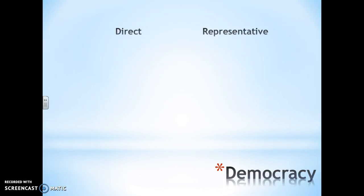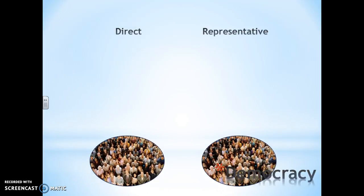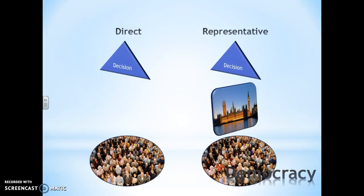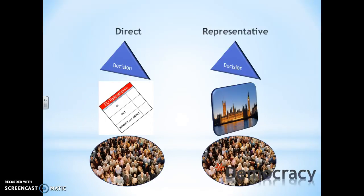So democracy — we know that there are two different types: representative and direct. Now both of those recognise the primacy, or rather the sovereignty, of the people. This is where all political authority comes from. We have the people and we have a decision. In the representative system there is an intermediary — the government, Parliament at Westminster in particular. In direct democracy there is no intermediary, which is why we say direct democracy is the direct and unmediated involvement of the political sovereigns in policy making.